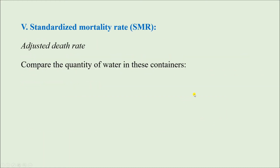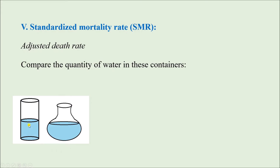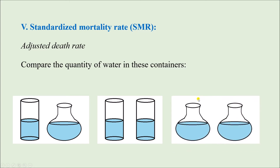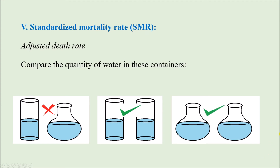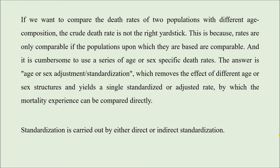Standardized Mortality Rate (SMR), also known as adjusted death rate. Let us understand this with an example: suppose we have to compare the quantity of water in two different containers. If the level of water is the same but the containers have different shapes, the quantity of water is not identical. But if both containers have the same level and the same shape, the quantity is identical. So when comparing the quantity of water in two containers, not only the level of water but also the shape of the containers must be taken into account. The same thing goes for comparing death rates between two different populations.